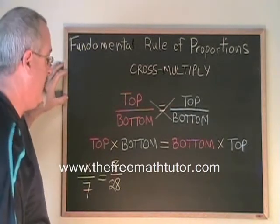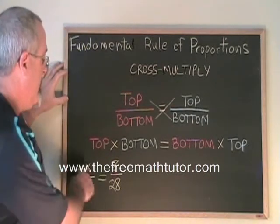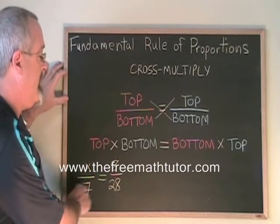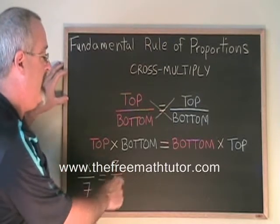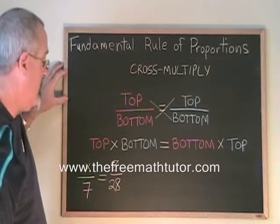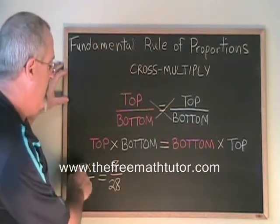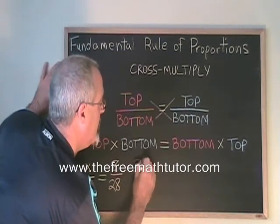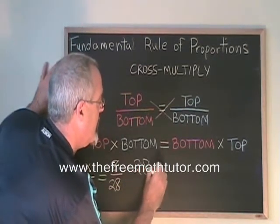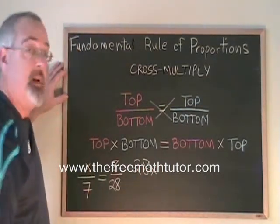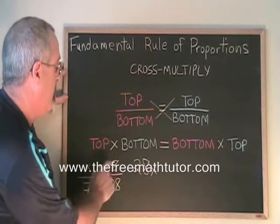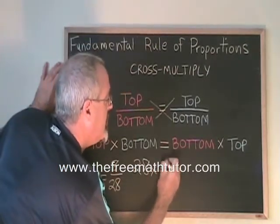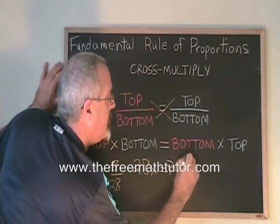Let's do an example to illustrate it. Here we have a top of x, a bottom of 7, a top of 8, a bottom of 28. Top times bottom means x times 28 — I'll write that as 28x. Bottom times top means 7 times 8, so I put equals and 7 times 8.